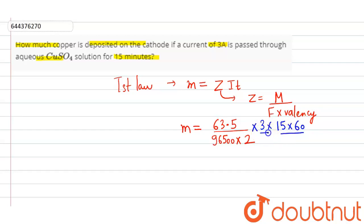And the time must be converted into seconds, so 15 into 60. So this is the time period, this is the current, and this is the complete values of z. So if we solve all the values given here, we will get the answer as 0.889 grams.